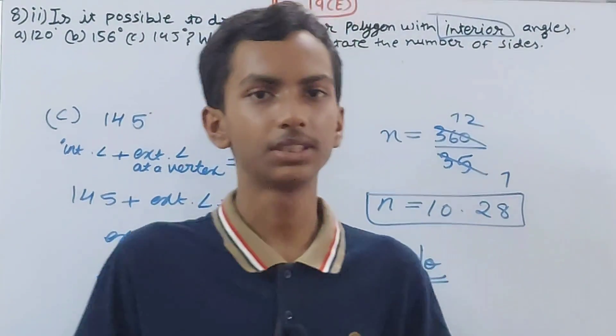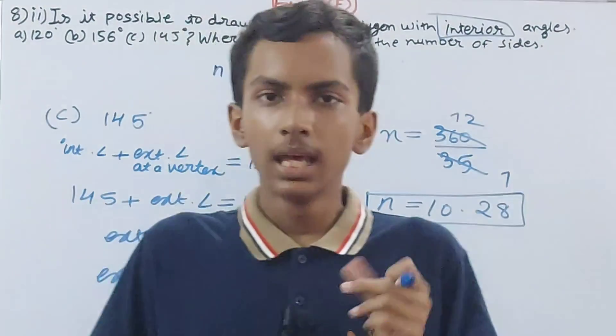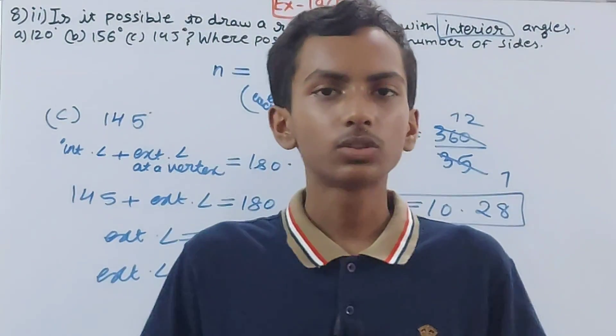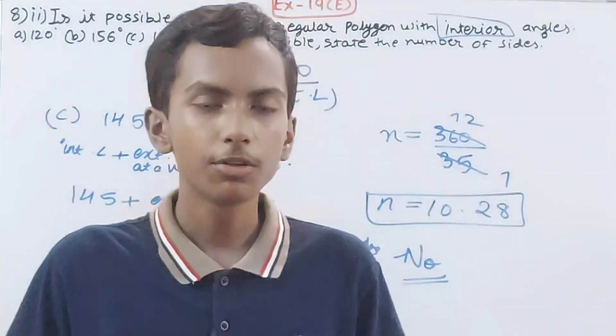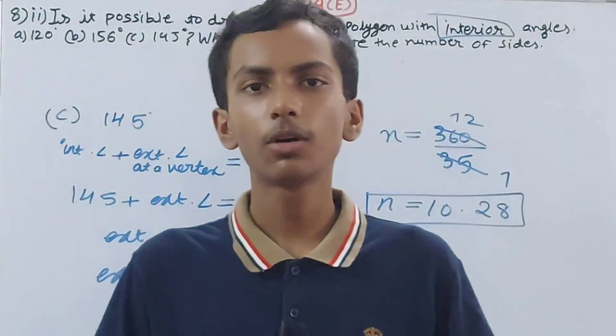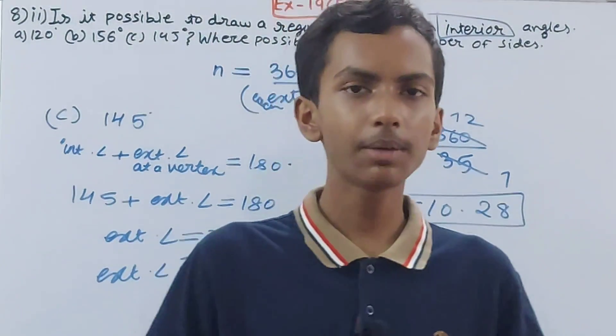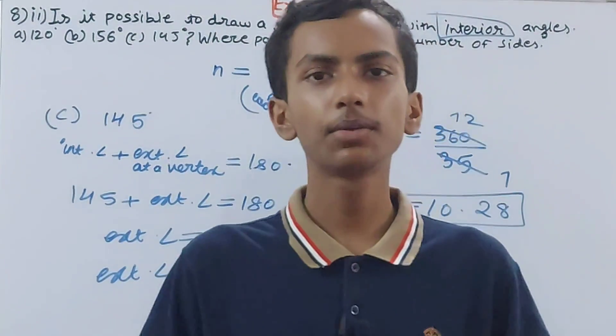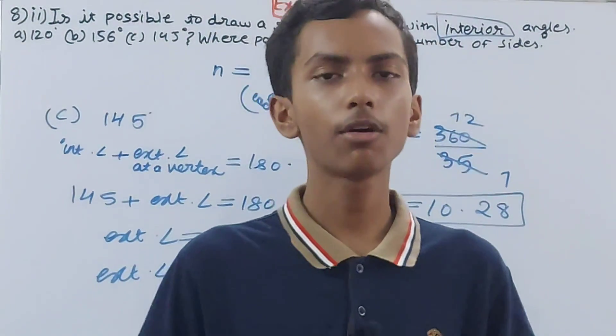So the answer for part c is no, it is not possible to make a regular polygon, because n is not coming out as a whole number. That's all for today. If you are new to my YouTube channel, do not forget to subscribe and leave a like. Till then, take good care of yourself.